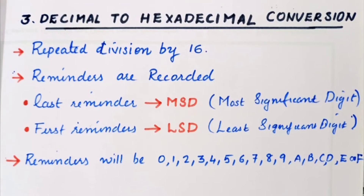Now we will look at Decimal to Hexadecimal Conversion. Decimal is base 10 and hexadecimal is base 16. The method is similar — we divide the decimal number repeatedly by 16 and record the remainders. Reading the remainders from bottom to top gives the hexadecimal number, with the last remainder being MSD.